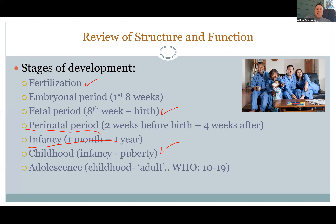And then adolescence — it wasn't the easiest to pin down a definition. The World Health Organization says between 10 and 19, but it's essentially between puberty and when you're an adult and start aging after that.